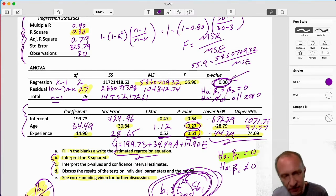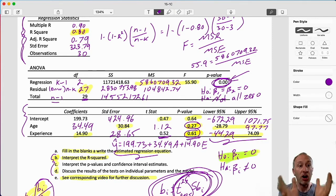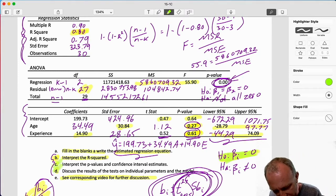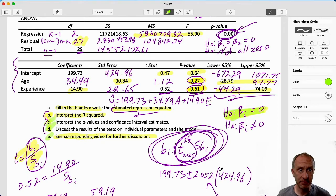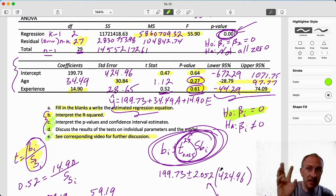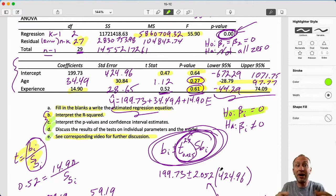And in terms of age, the answer is no. Given what experience has to contribute in explaining the person's salary, age has nothing further to contribute. And similarly, the test on experience, given what age has to contribute in explaining somebody's salary, experience has nothing additional to contribute. This is saying, when we look at that f test, together, they are explaining a statistically significant amount of the variation in salary. So what's going on here? So just to tick these off, we've gone through, we've talked about Part C and Part D.